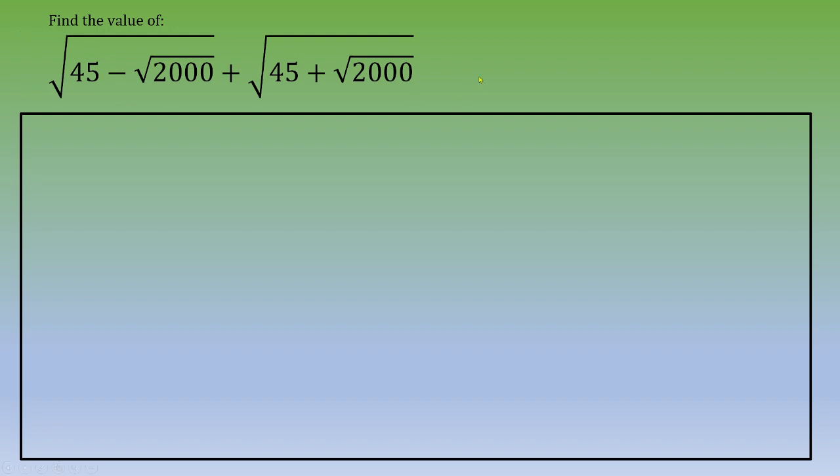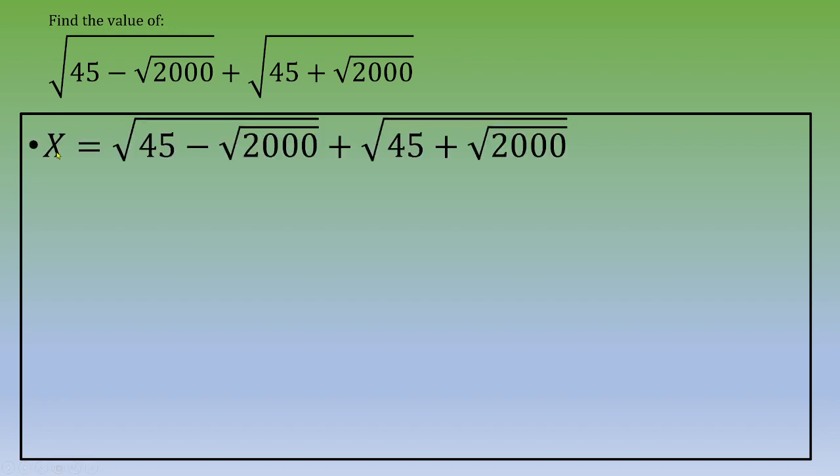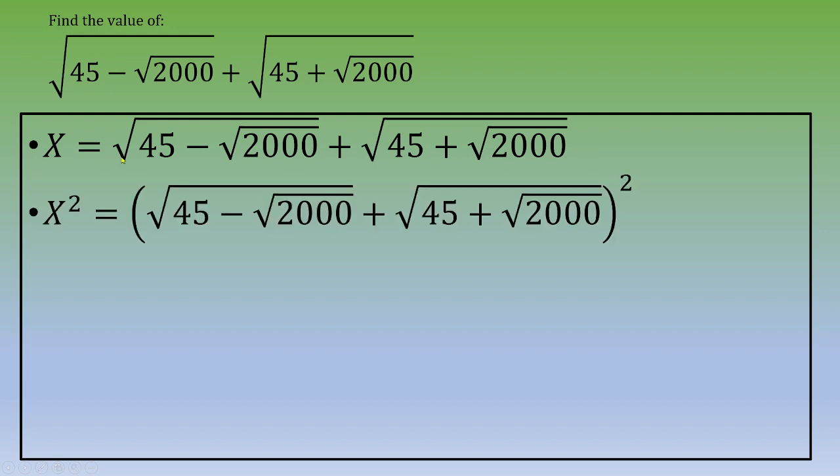When you deal with a number with square roots, in this case two square roots, you can start by squaring this number. So first step, I'm going to call x this number, and the second step, I'm going to square both sides.